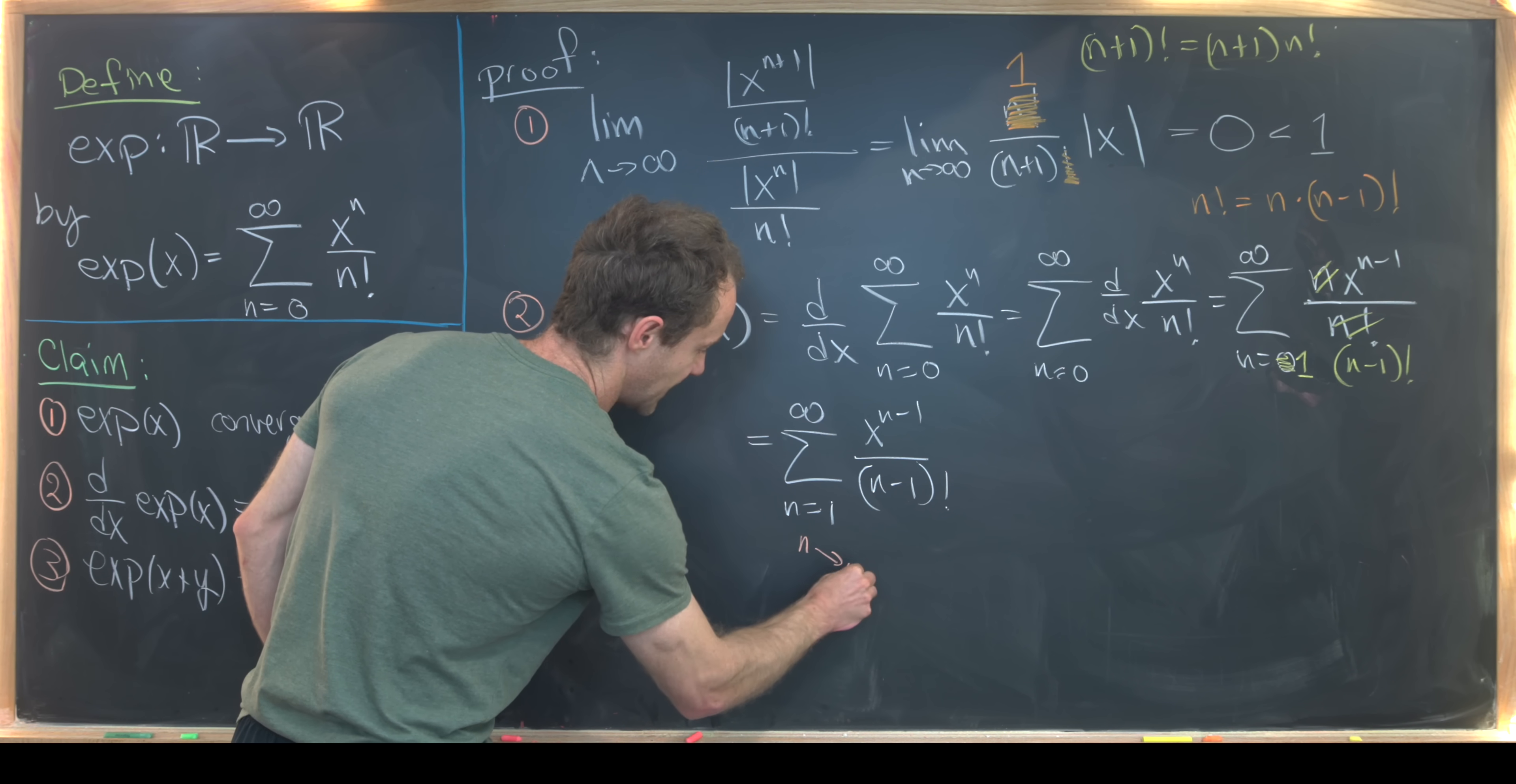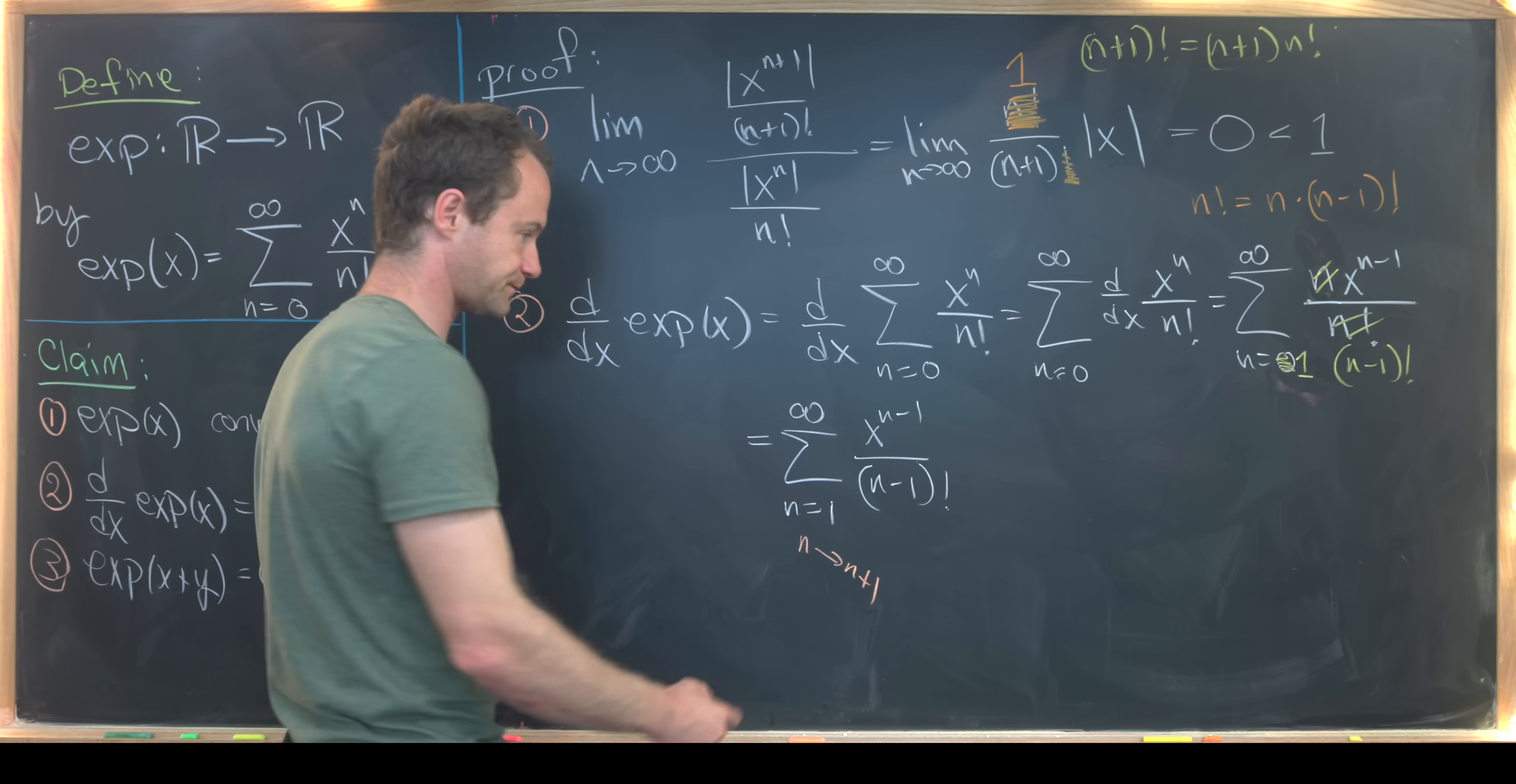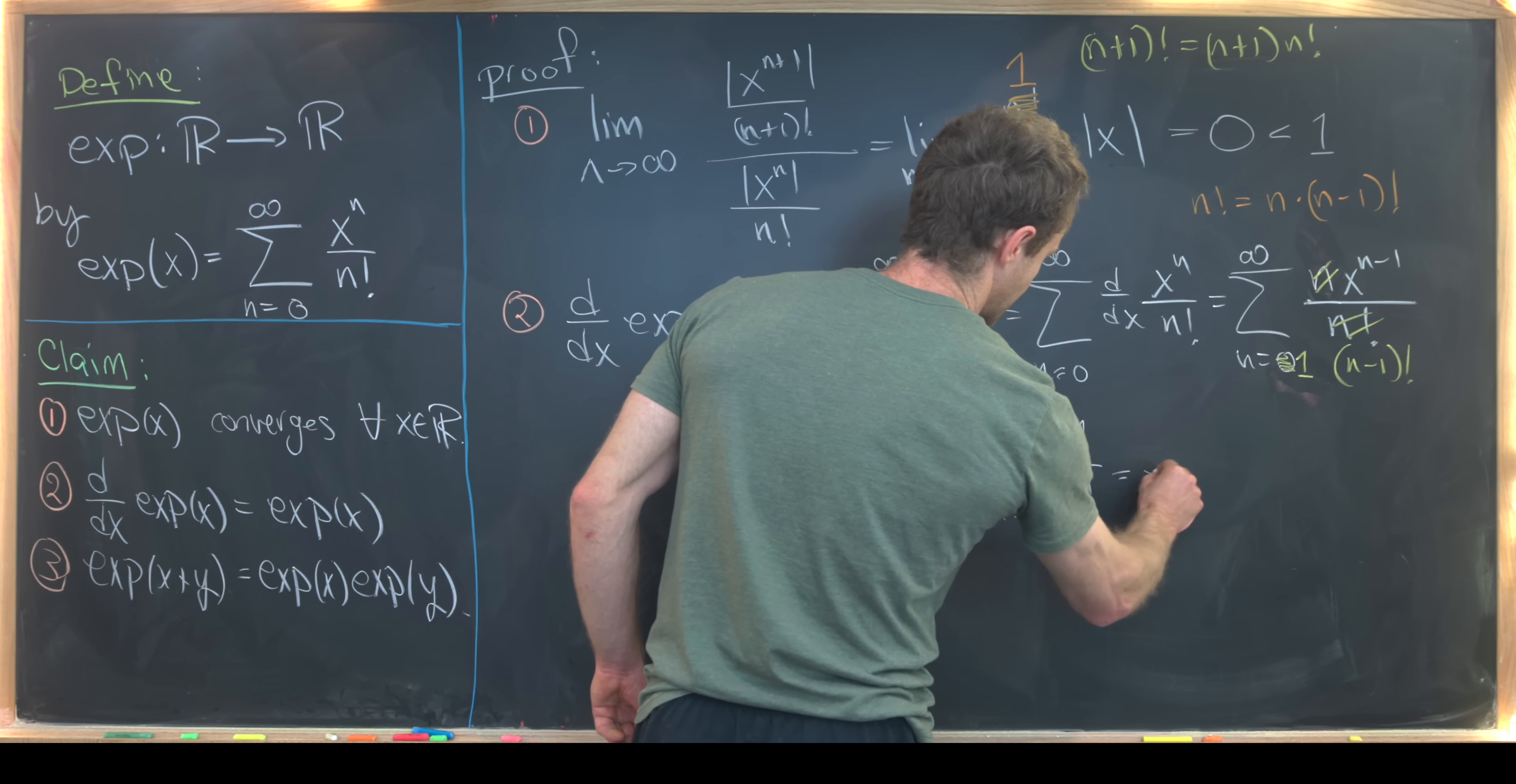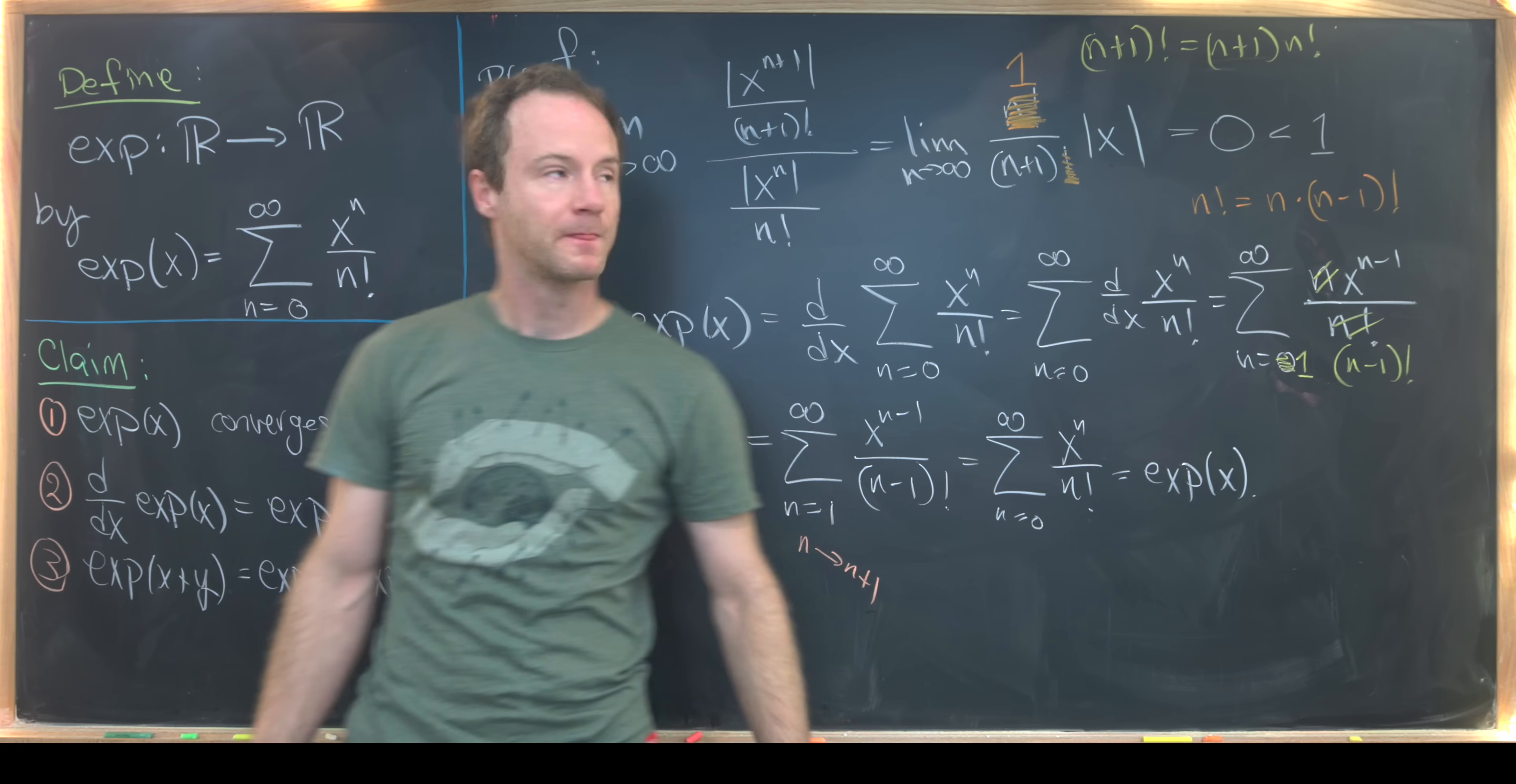Now we can do a re-indexing of the sum. So let's replace n with n+1. That means we'll start at 0 instead of 1 because when n+1 is 1, n is 0. And then this will turn into x to the n over n factorial. So in other words, we've got the sum as n goes from 0 up to infinity x to the n over n factorial. But that is our original function exp(x). So our function satisfies this second property.